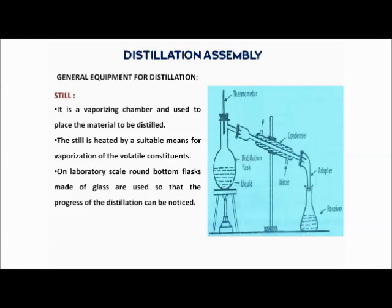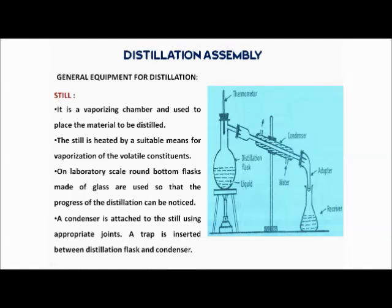On a laboratory scale, a round bottom flask (RBF) made of glass is used as the still. Glass is used so we can see the progress of distillation — whether the volume of liquid has remained unchanged or has decreased over time.